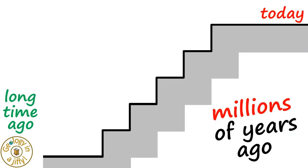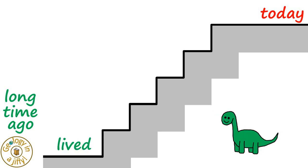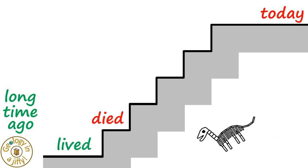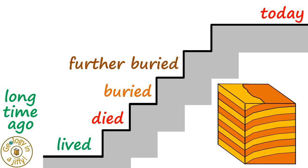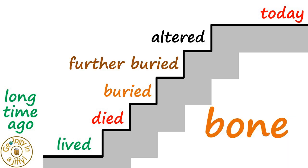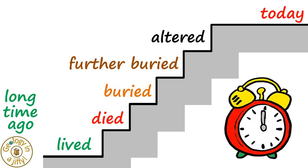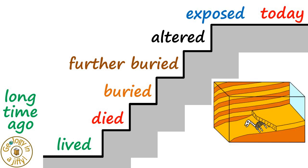That's amazing! So the steps of fossilisation are: the organism lived, the organism died, the soft parts decayed, the organism was buried for a long time during which it became altered and turned to stone, when sometime later it was exposed at the surface for us to find today.